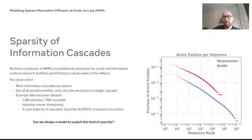Looking at the right side of the plot, you can see that for the vast majority of cascades, less than 0.0001% of domains are actually active in one of these sequences. This is a kind of sparsity. Our question was: can we design a model that can exploit this kind of sparsity such that we can scale better?